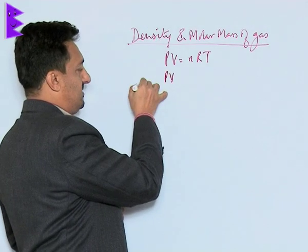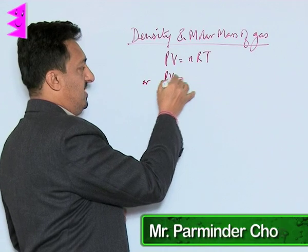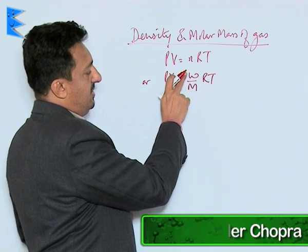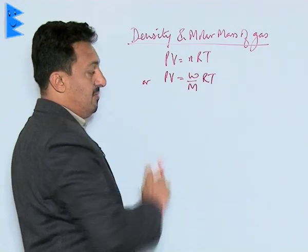We know we can write this as number of moles times volume as weight upon molar mass times RT, where W is the weight of the gas and M is the molar mass of the gas.